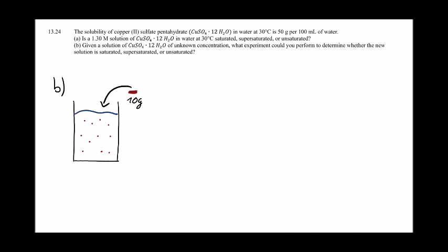Part B: given a solution of copper sulfate pentahydrate of unknown concentration, what experiment could you perform to determine whether the solution is saturated, supersaturated, or unsaturated? What you will do is add more copper sulfate pentahydrate into your solution — for example, 10 grams. Precipitation will occur, meaning crystals will form in your solution.